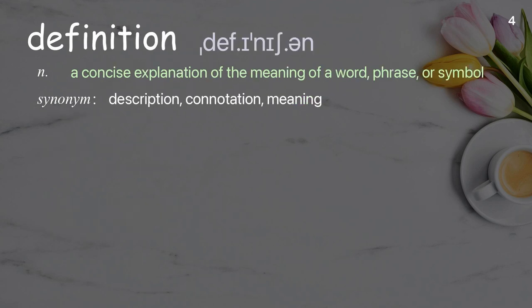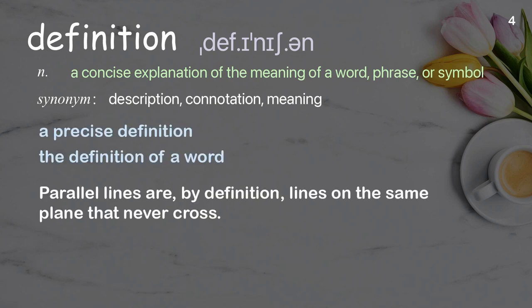Definition: A concise explanation of the meaning of a word, phrase, or symbol. Examples: a precise definition, the definition of a word. Parallel lines are, by definition, lines on the same plane that never cross.